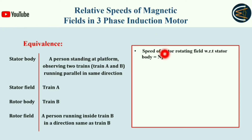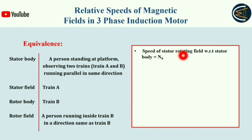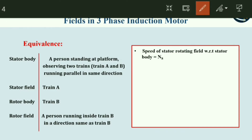The first point: the speed of the stator rotating field with respect to the stator body is NS. The stator body is a standstill object — like a person standing on a railway platform observing two trains. With respect to you, the speed of the stator rotating field is the absolute speed. Since the stator field is train A, and you are standstill, you will observe the absolute speed of train A.